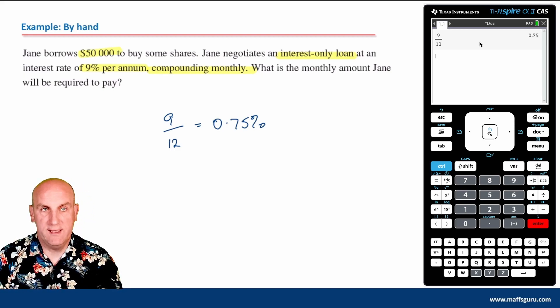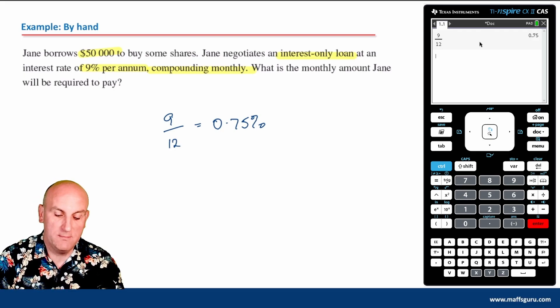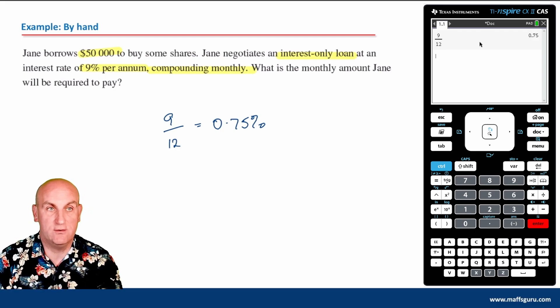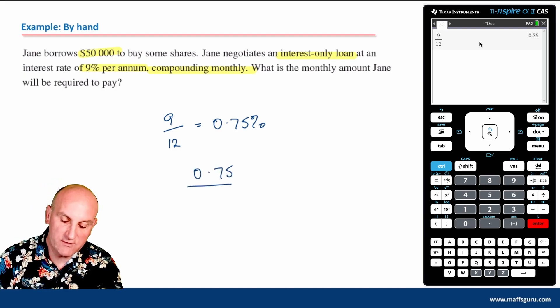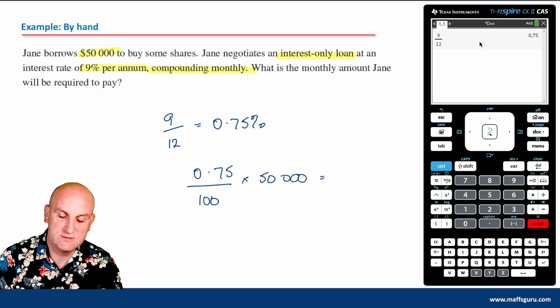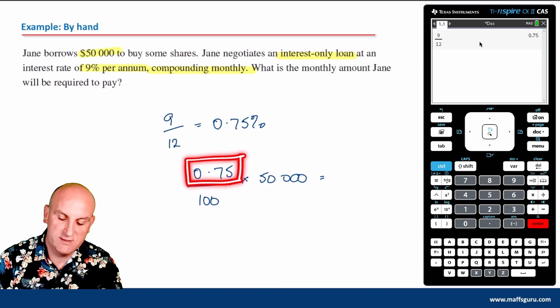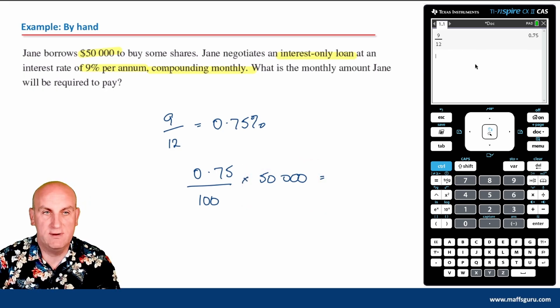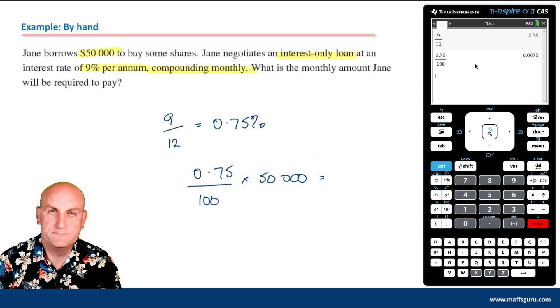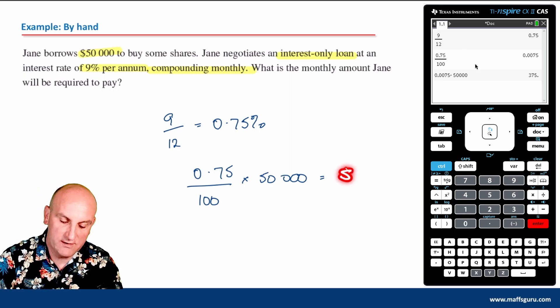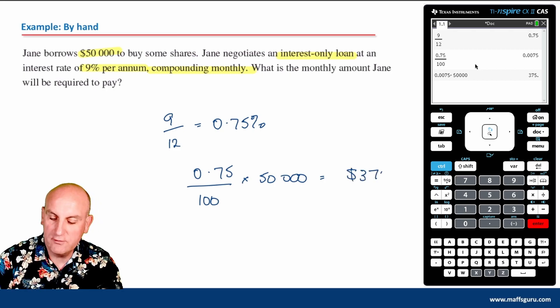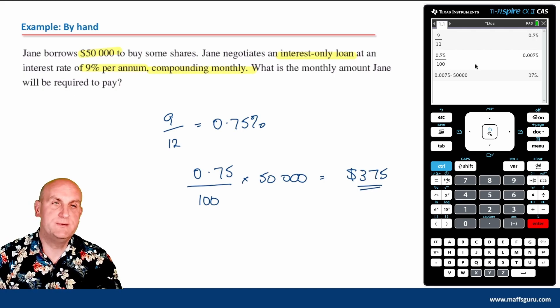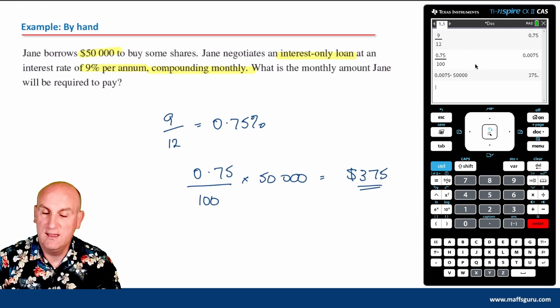0.75% of my overall amount, this $50,000, is actually going to be my monthly amount that Jane will be required to pay. 0.75 divided by 100 times 50,000 - my monthly interest rate divided by 100 times 50,000. That gives me $375. That's by hand.